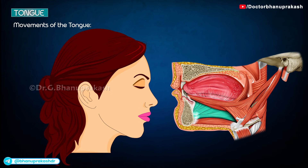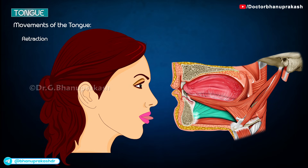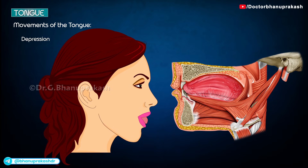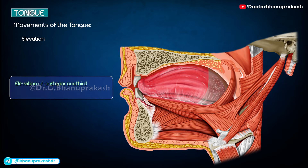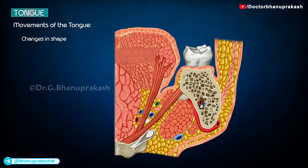Protrusion, the most important movement, is produced by the genioglossus muscles of both sides acting together. Retraction is produced by the styloglossus muscles of both sides acting together. Depression is produced by the hyoglossus muscles of both sides. Elevation of the posterior one-third is produced by the palatoglossus muscles of both sides. Changes in shape are produced by the intrinsic muscles.